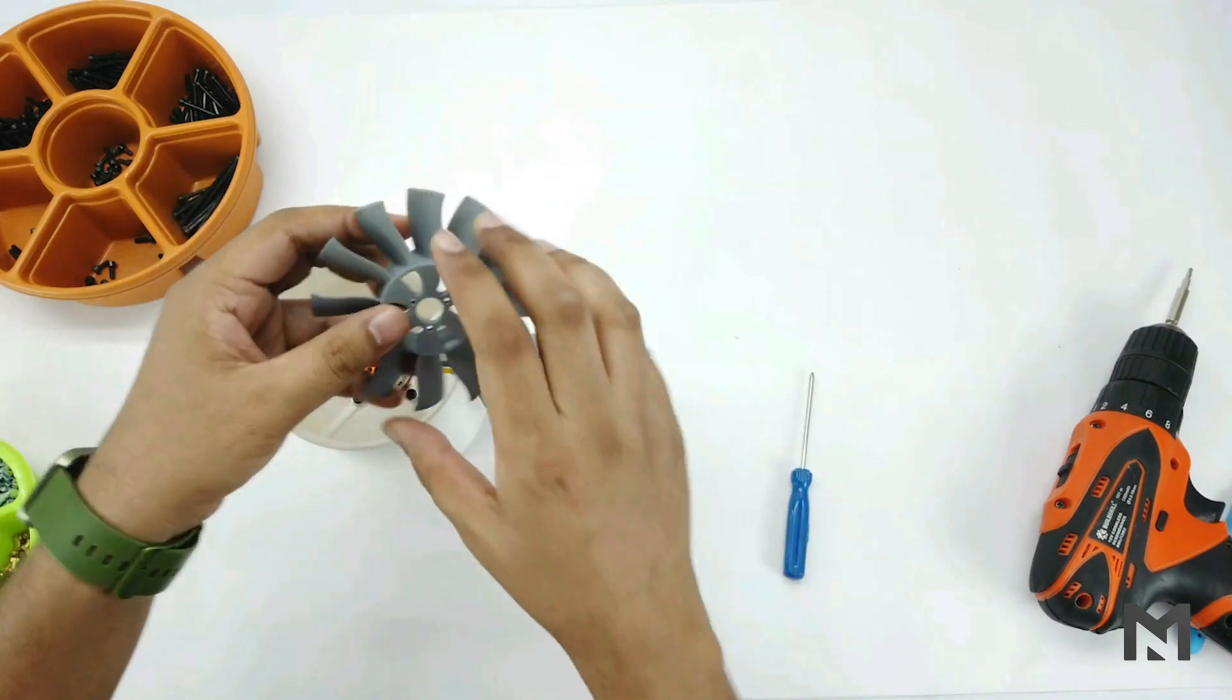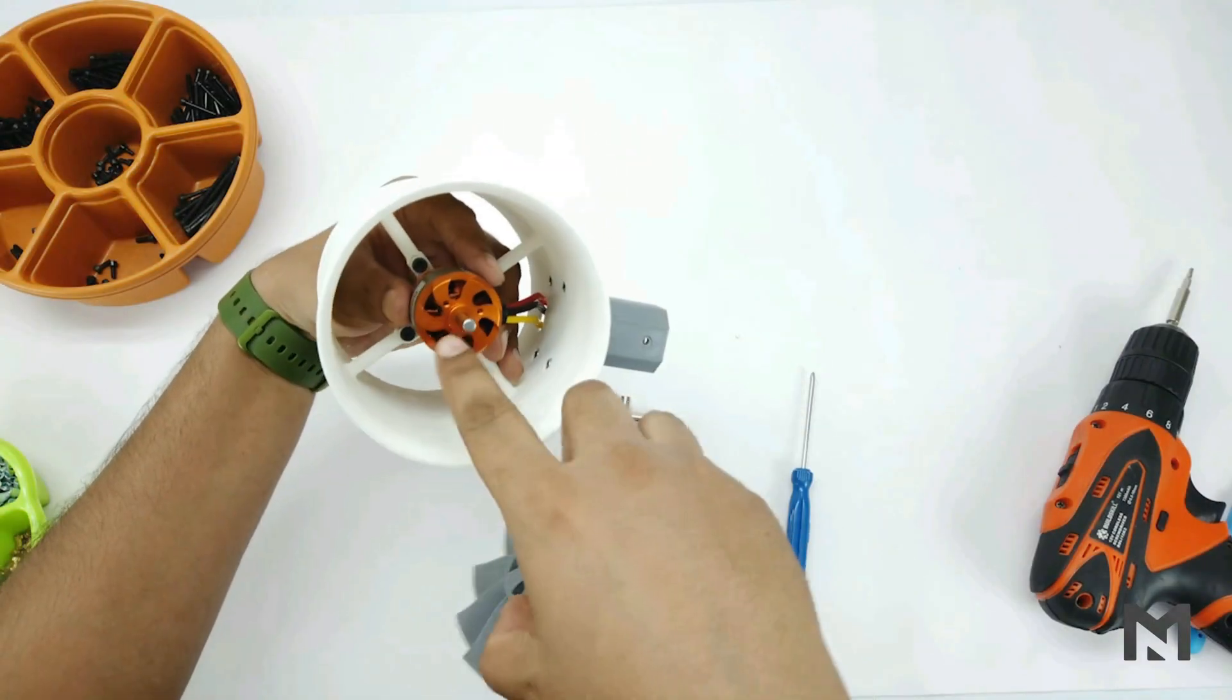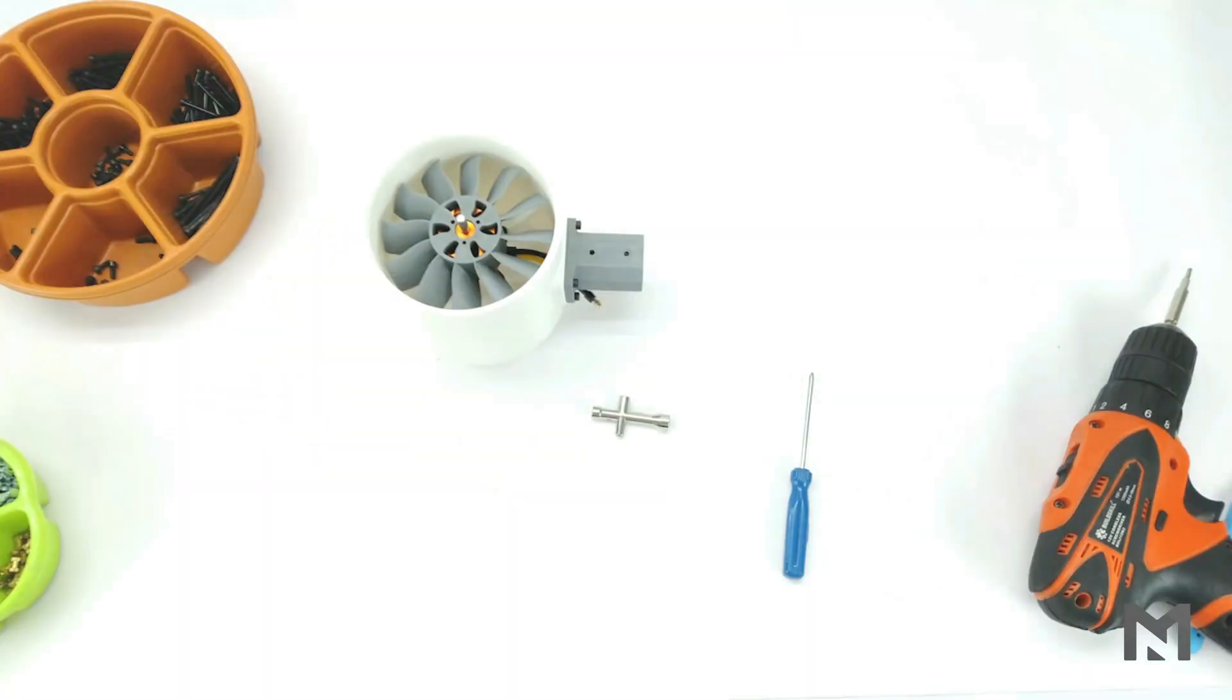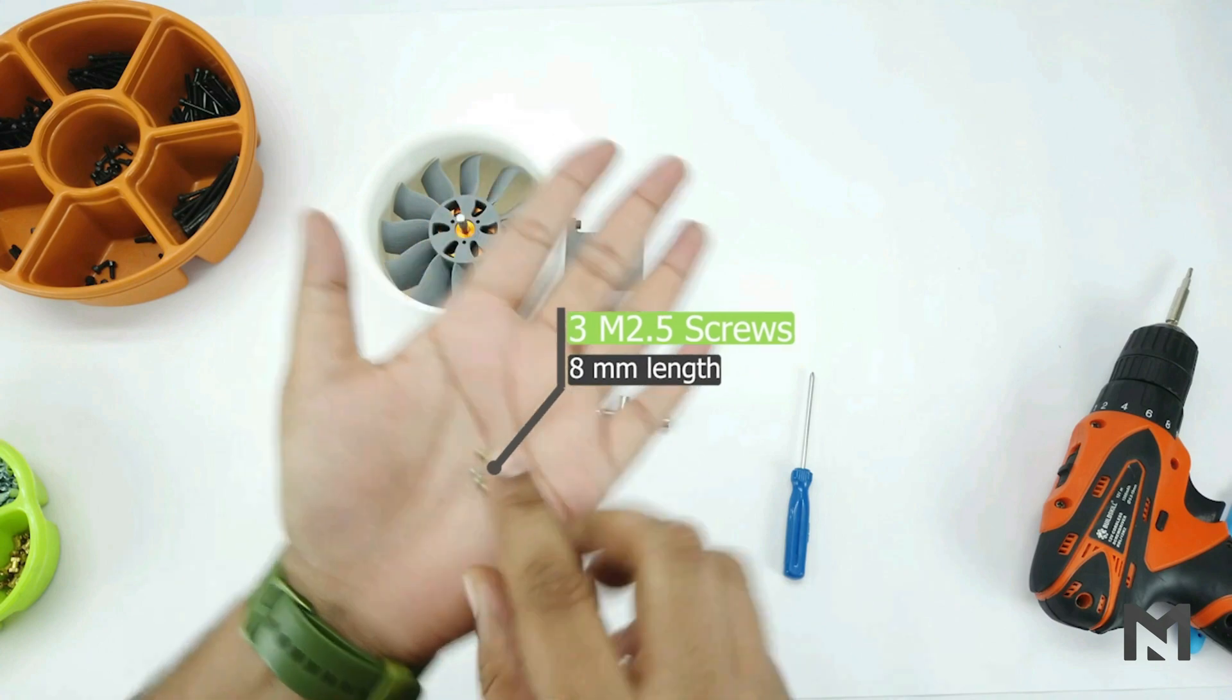Now I will connect this propeller. So for connecting the propeller align the three holes of motor and propeller. Then connect M2.5 screws of 8mm length.